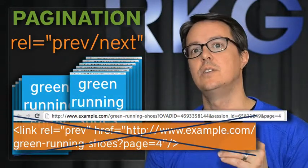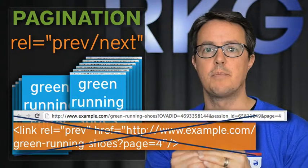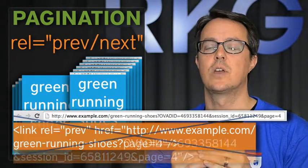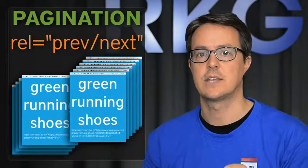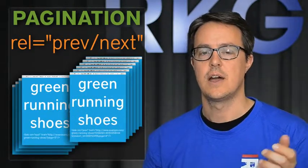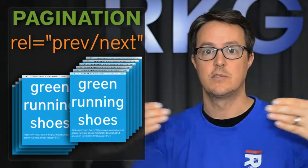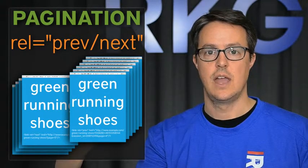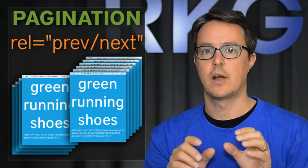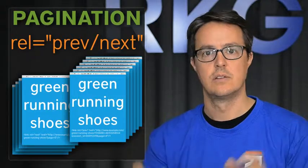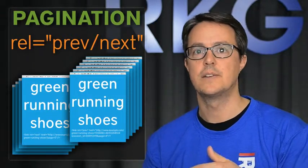Rel-canonical is then used to basically clear up the duplication. You can think of rel-prev-next as indexing signals coming together into a series of pages, and rel-canonical as clearing up duplication between URLs that fire the same content.